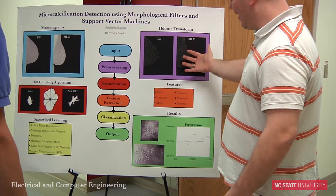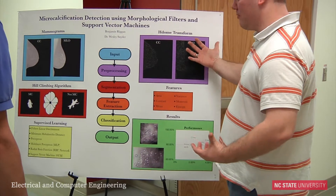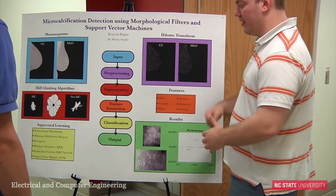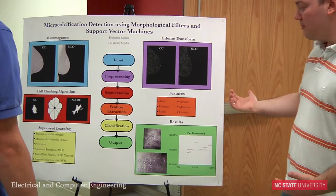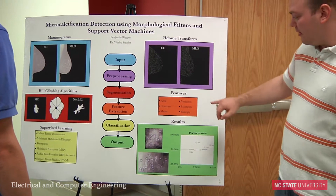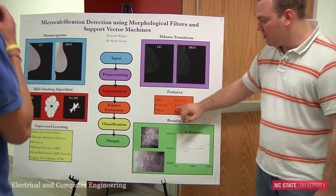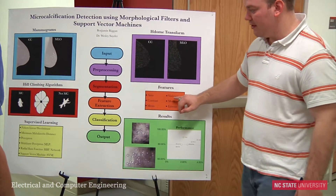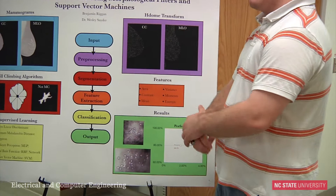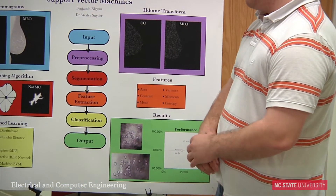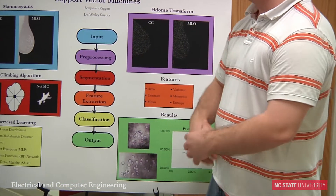Naturally this gives you a lot of false positives, but it's a starting point. We put the candidates in the image, and then what we do is take a bunch of measurements describing the microcalcification, and then we put it through what's called supervised learning.